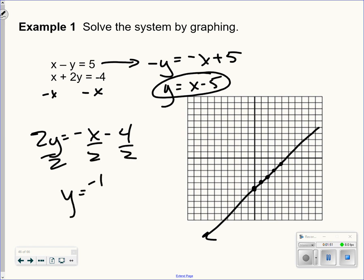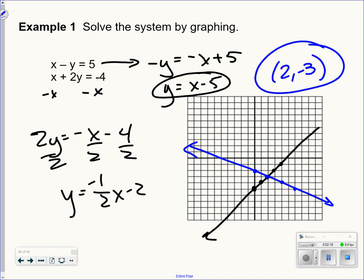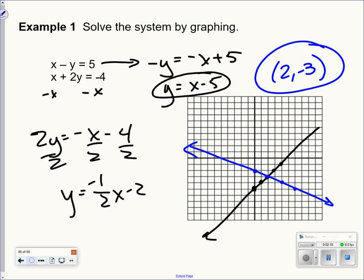This one, I'm going to choose a different color here, crosses at negative 2 with a slope of negative 1 half. So I see these two lines crossing, and the point at which they cross is the solution. They cross at the point 2, negative 3. So two lines that cross at one point, the intersection is the answer.